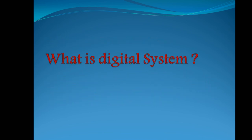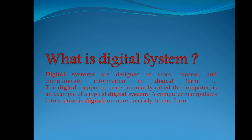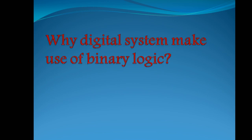What is a digital system? Digital systems are designed to store, process, and communicate information in digital form — normally binary form. Digital systems process data in terms of ones and zeros. An example of a digital system is a digital computer. An important question is: why do digital systems make use of binary logic?